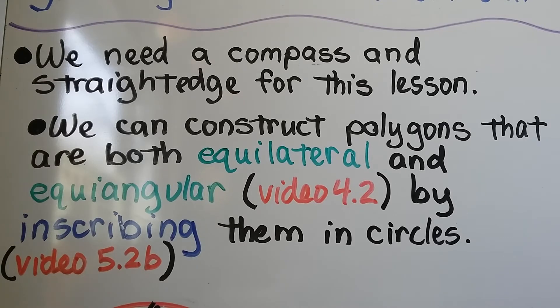We can construct polygons that are both equilateral and equiangular by inscribing them in circles. We learned about equilateral and equiangular in video 4.2 and inscribing in circles in 5.2b.